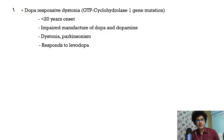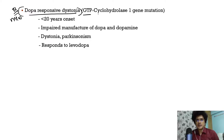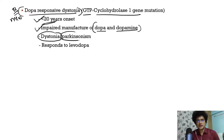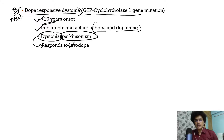Another important MCQ topic is dopa-responsive dystonia, caused by a mutation in the GTP cyclohydrolase-1 gene. It causes very early onset Parkinson's, usually less than 20 years of age, due to decreased synthesis of dopa and dopamine. It causes both dystonia and parkinsonism, and both respond very well to levodopa, because the problem is impaired manufacture of dopa and dopamine.